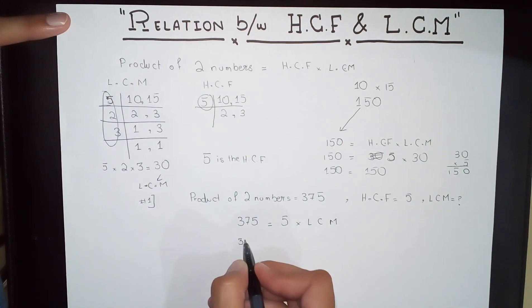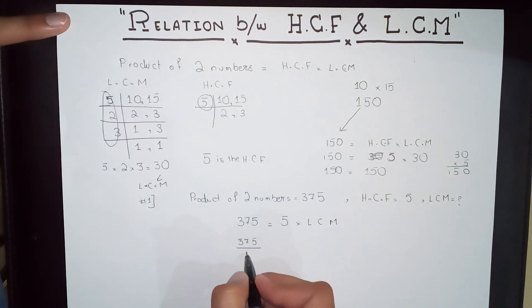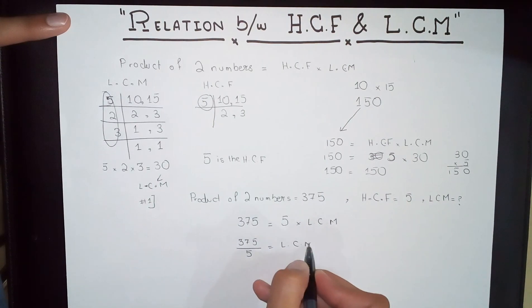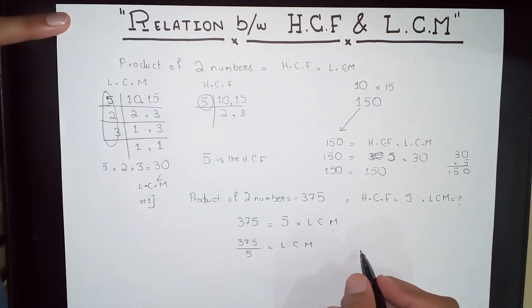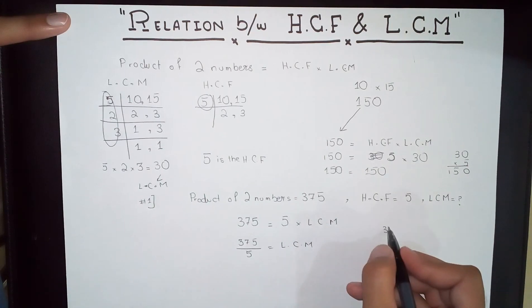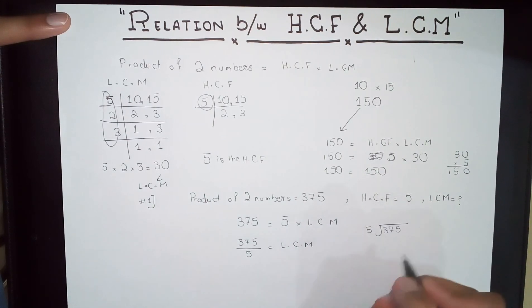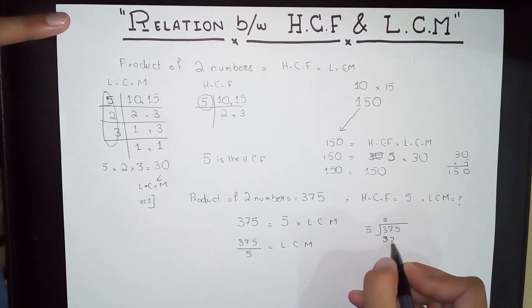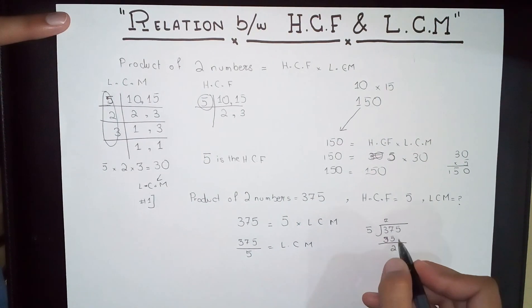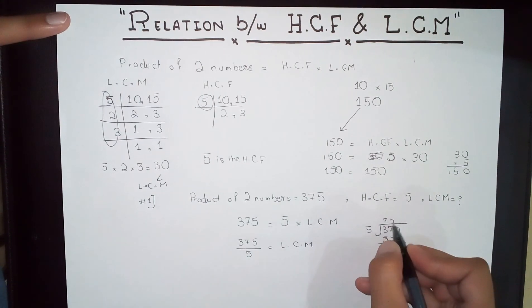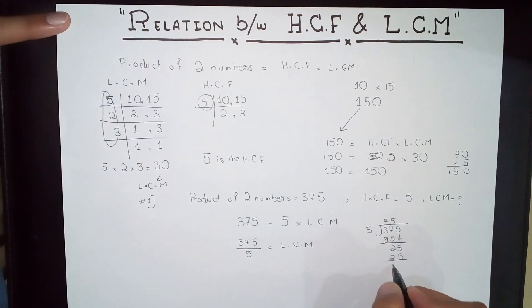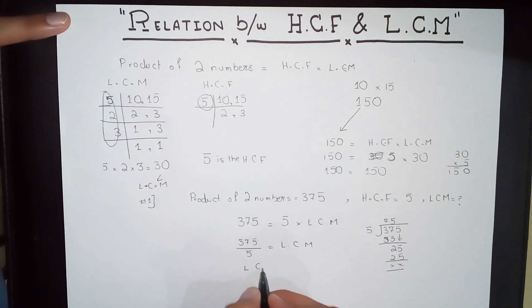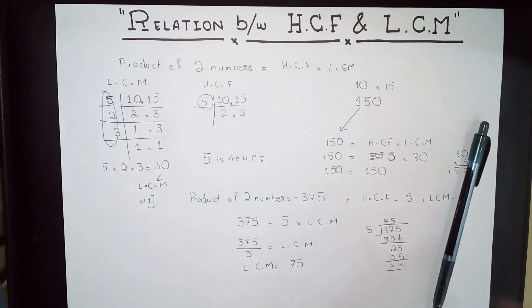We just need to find the LCM. Dividing 375 by 5: 5 times 5 is 25, and we get 75. So the LCM is 75.